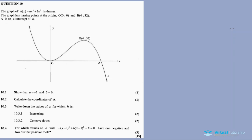All right, learners. This is a discussion on question 10 — a cubic function from the November 2021 question paper. Links for other questions are in the description box. The graph of h of x is drawn. It has turning points: one at the origin, one at point B with coordinates, and then A is the x-intercept of h. For 10.1, we need to show that a equals negative 1 and b equals 6.